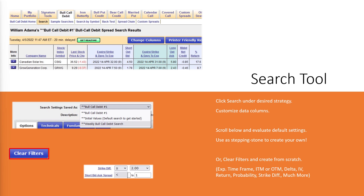In addition to screening for various stock technicals and fundamentals, you can select your expiration timeframe, range in the money or out of the money for your spread, delta, delta ratios, implied volatilities, implied volatility ratios, minimum return, maximum net debit you're willing to pay, probability, adjust strike difference, and much more.